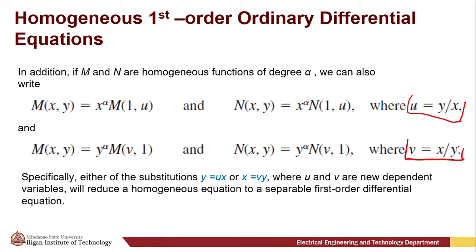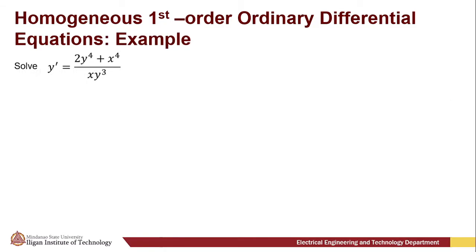Either of the substitutions y = ux or x = vy, where u and v are new dependent variables, will reduce the homogeneous equation to a separable first-order differential equation. By substitution, we transform the homogeneous equation to a separable first-order ODE. So we have here an example.